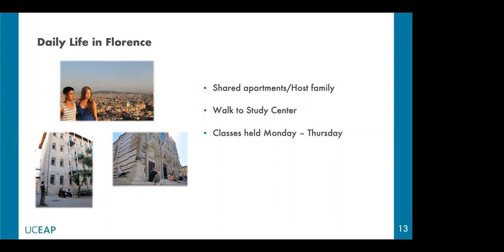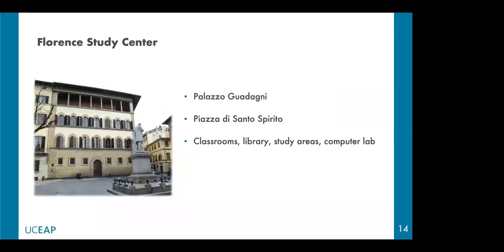Classes in Florence are also usually held Monday through Thursday. The Florence study center is located in the Oltrarno neighborhood — Oltrarno means 'across the Arno,' named after the main river running through the city. The building in the picture is called Palazzo Guadagni, built in the 1500s by a family of silk merchants. The study center is equipped with seven classrooms, a library, study areas, and a computer lab.